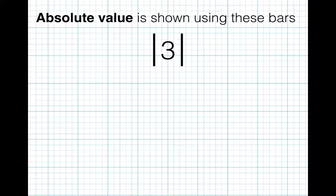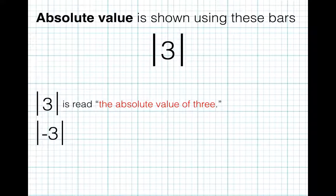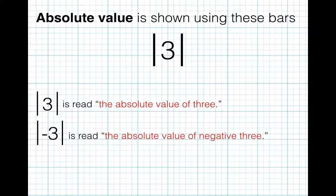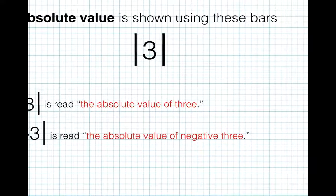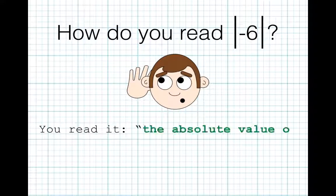Absolute value is shown using these bars. So this is read the absolute value of 3. And this is read the absolute value of negative 3. That's right! You read it the absolute value of negative 6.